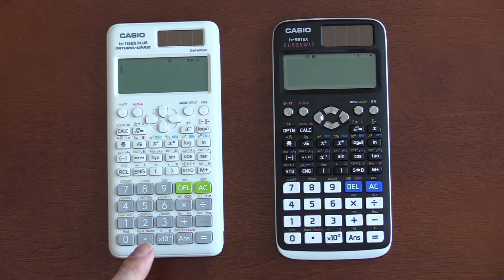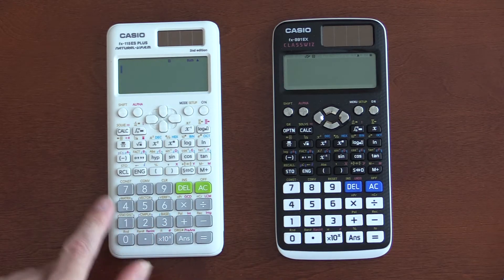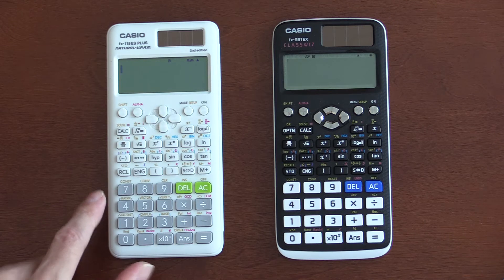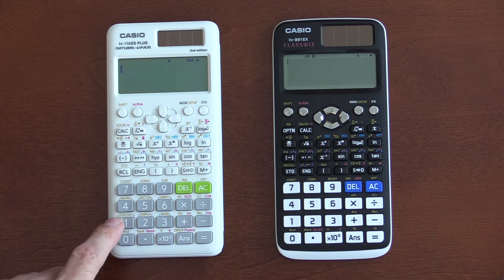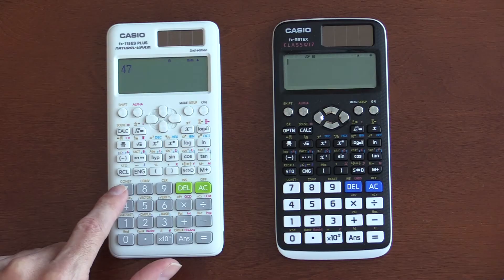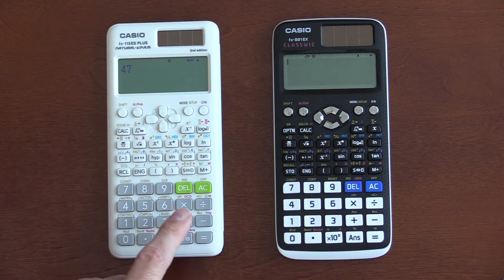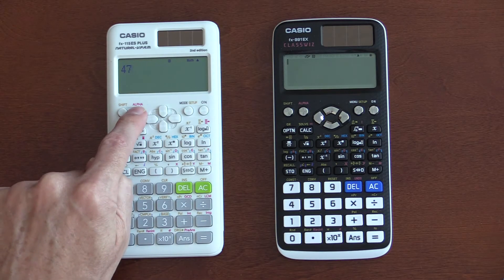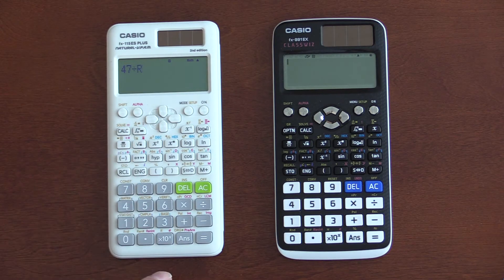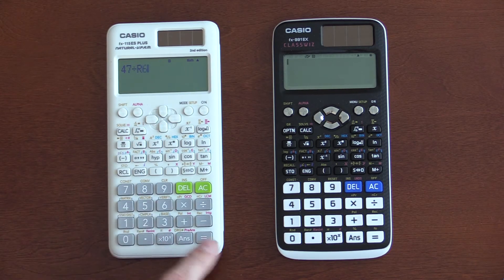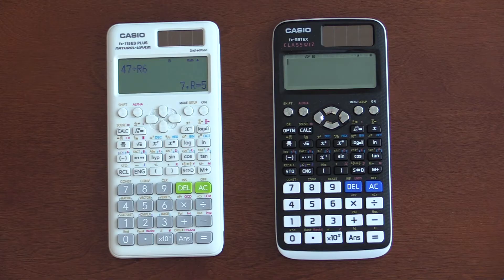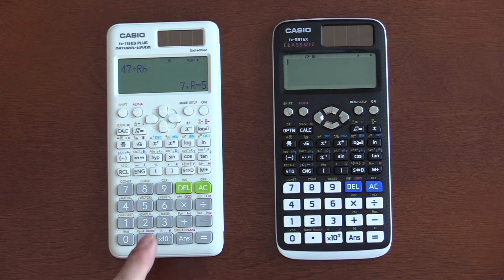Another thing that the ES offers, that the EX does not, is the ability to do remainder division, or modulus. So if I had 47, and I want to divide it by 6, but I want the remainder, I don't use this division, I use this one up here. Division with remainder, divide that by 6, and we get 7 with a remainder of 5. That's pretty slick, I like that.